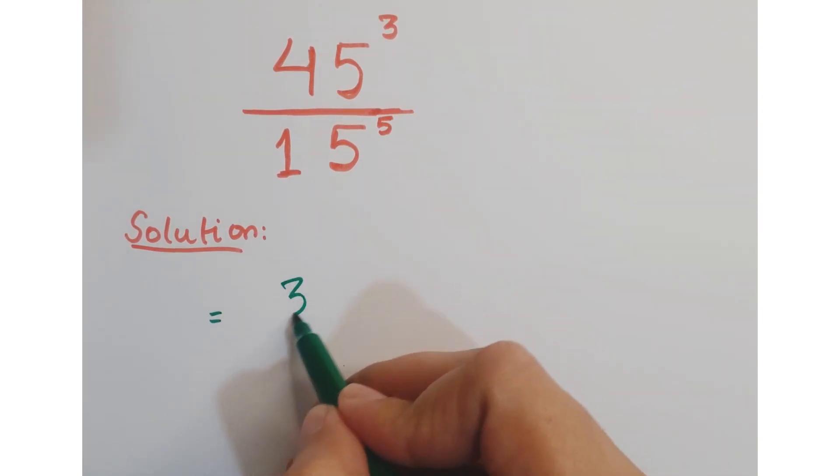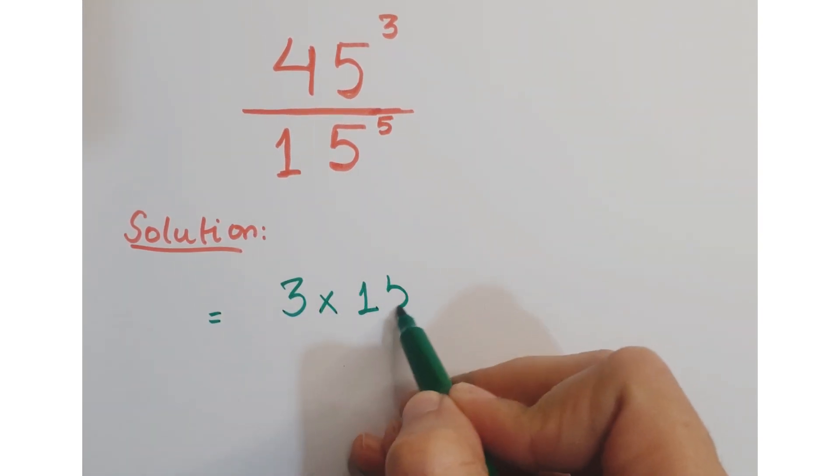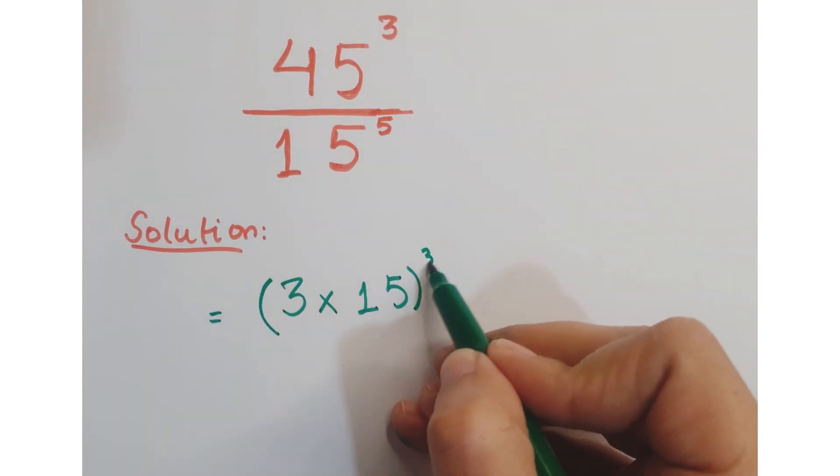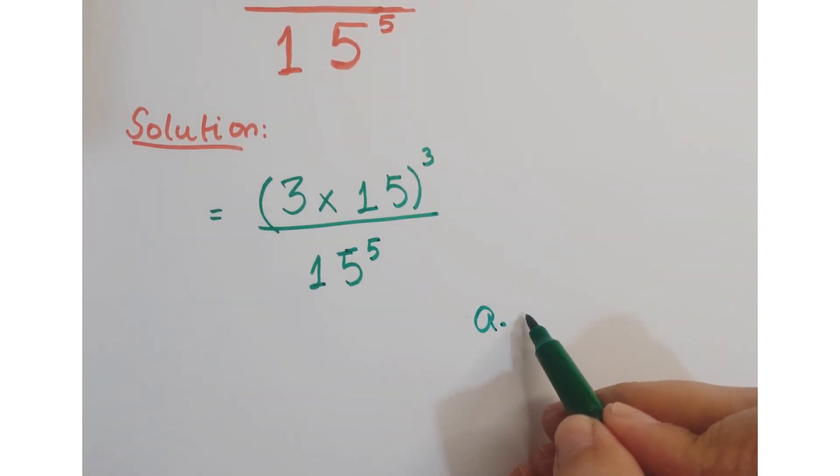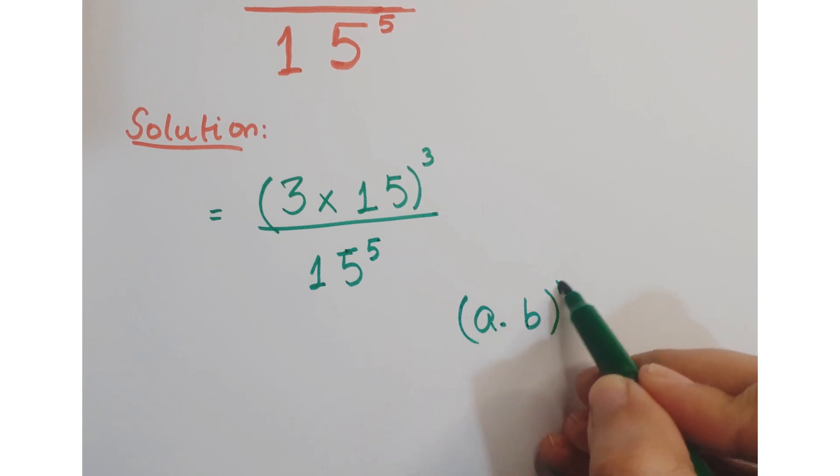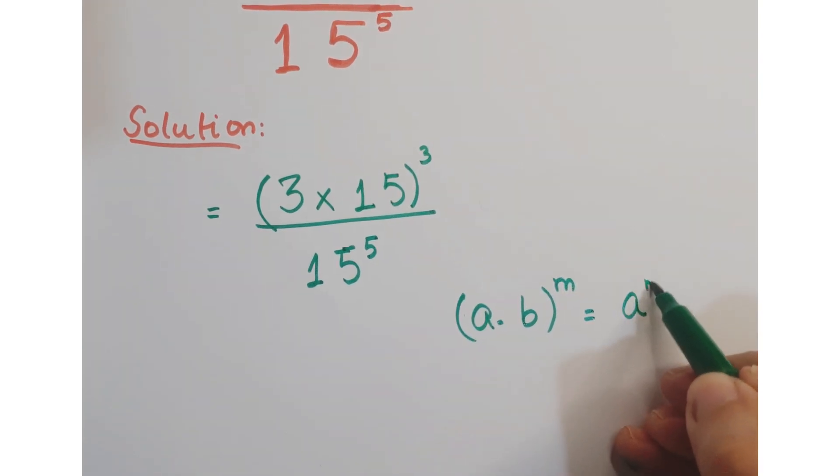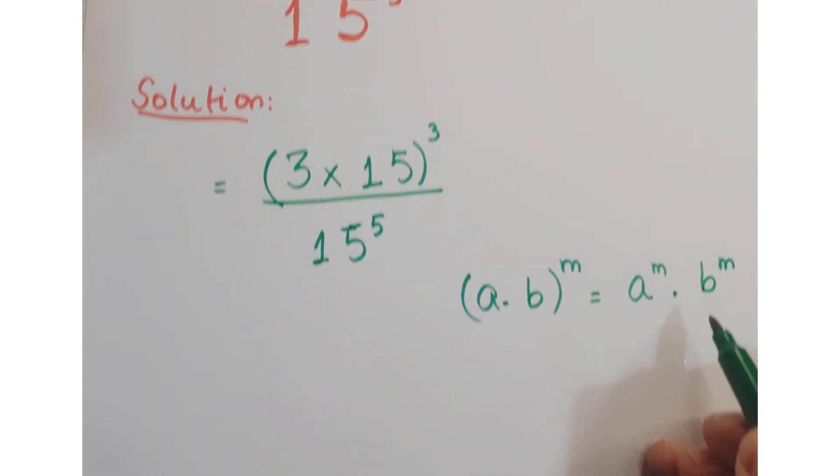Now we can write this 45 as 3 into 15 whole cube upon 15 to the power 5. Now as you know that a into b whole to the power m can be written as a to the power m into b to the power m.